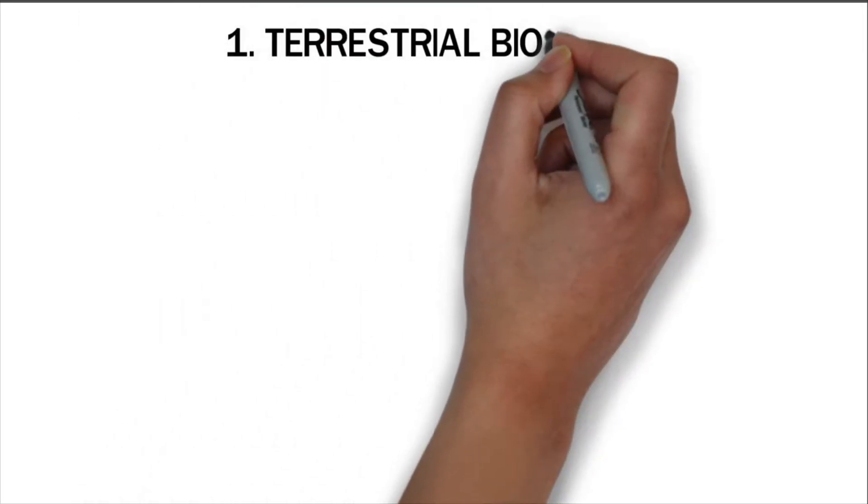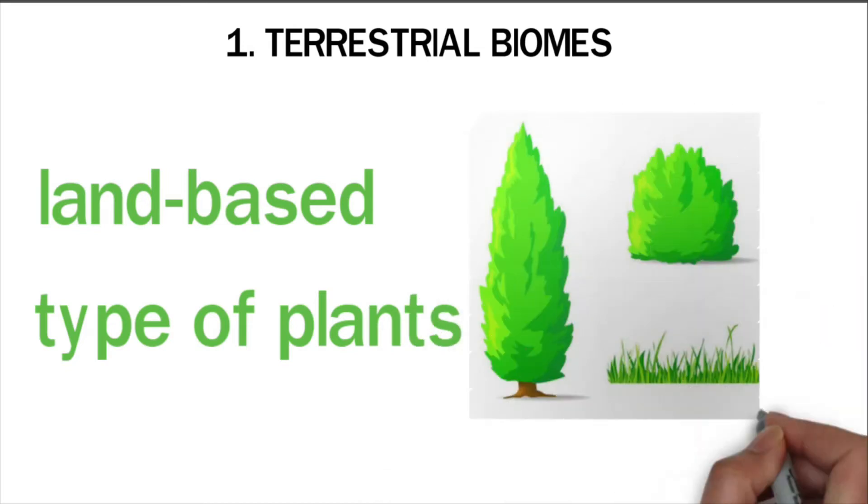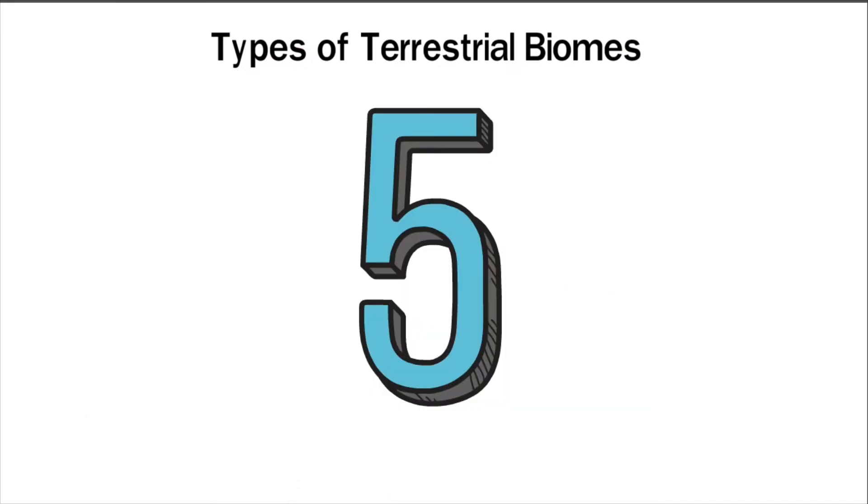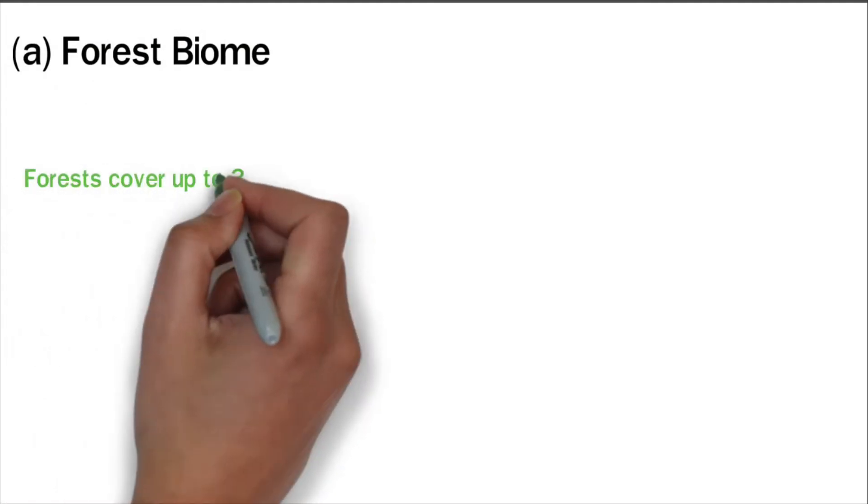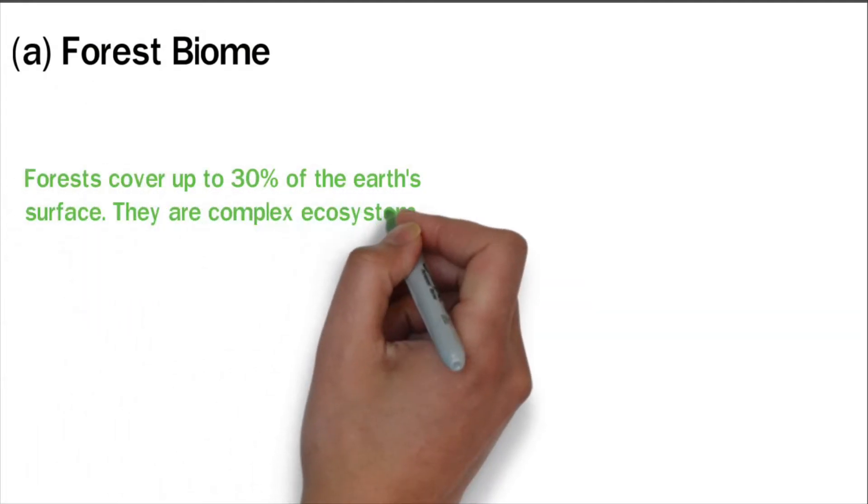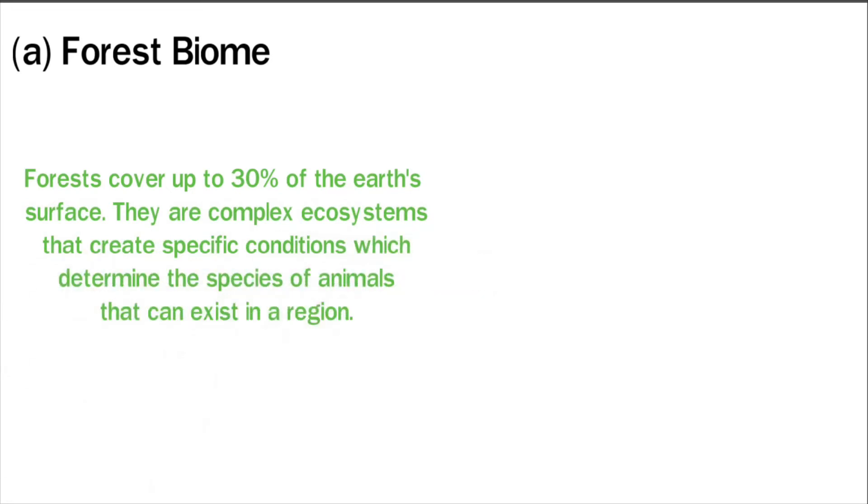Terrestrial biomes are land-based and can be defined by the type of plants in an area. These biomes have different types of trees, grasses, and shrubs. Terrestrial biomes are divided into five major types. First, forest biome: Forests cover up to 30% of the earth's surface. They are complex ecosystems that create specific conditions which determine the species of animals that can exist in a region.